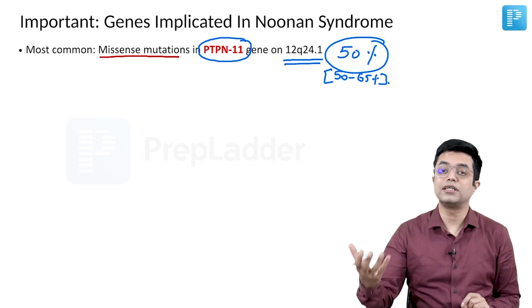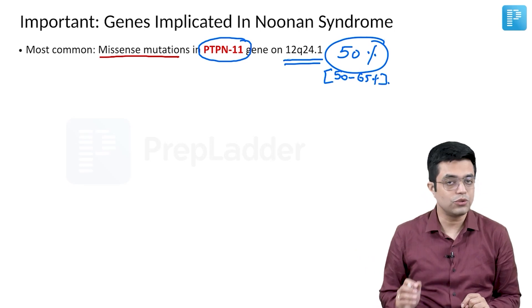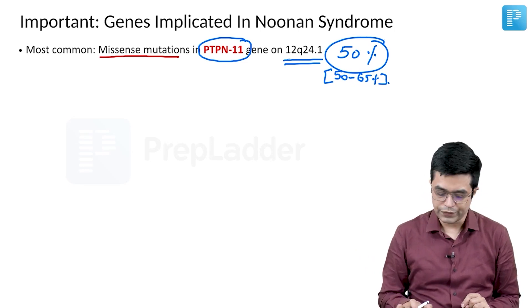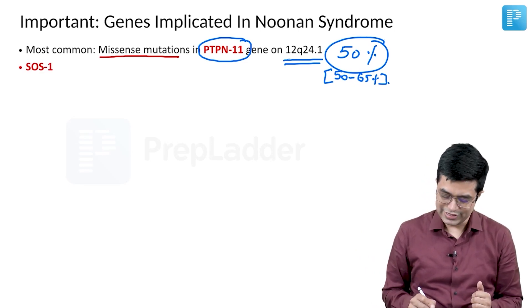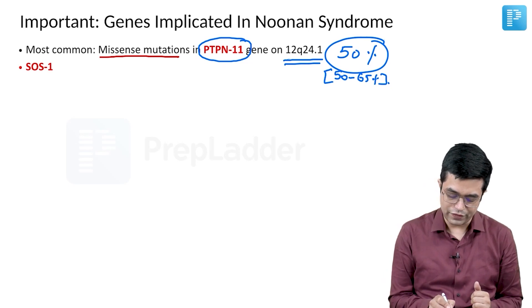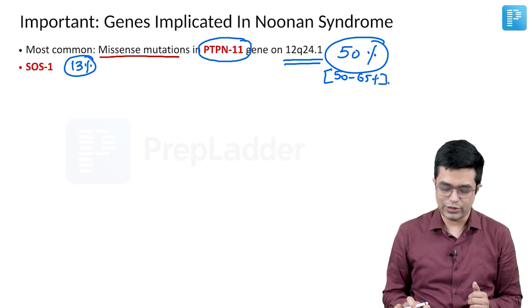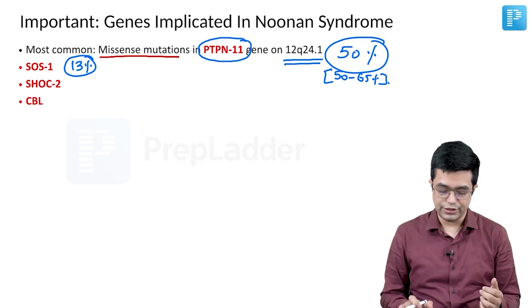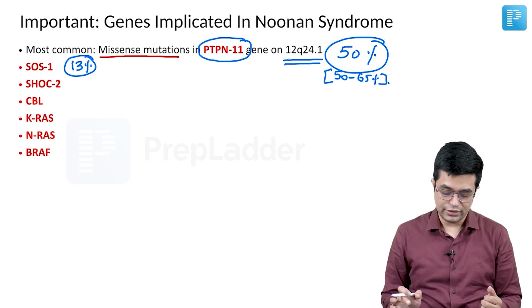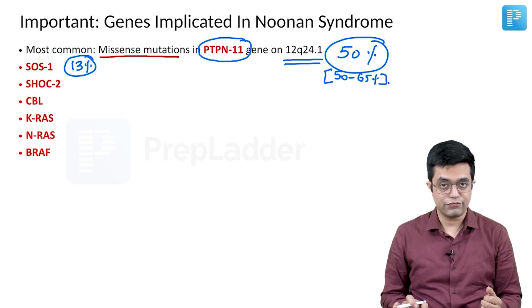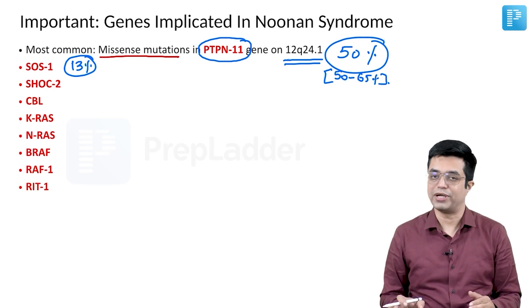Other genes whose mutations can also lead to Noonan syndrome include SOS1, which is involved in about 13 percent of cases, as well as SHOC2, CBL, KRAS, NRAS, BRAF, RAF1, and RIT1 genes.